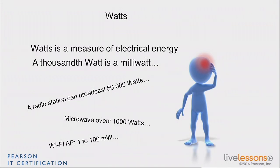Imagine if you have a 0.01% leakage on your microwave oven. That amount of energy spreading out is still more than the total output of your access point. And that matters, because those two sometimes work on the same frequencies — and when both are in the same area, typically Wi-Fi does not win.